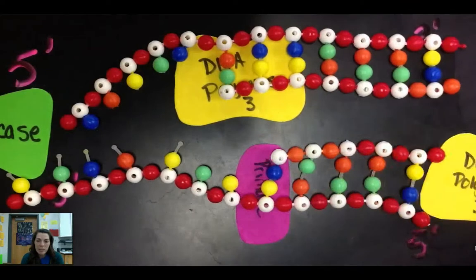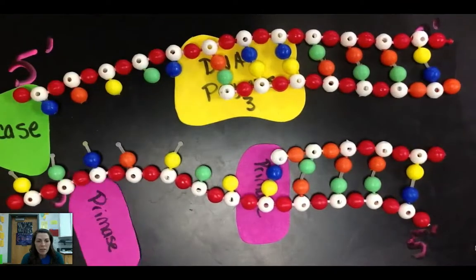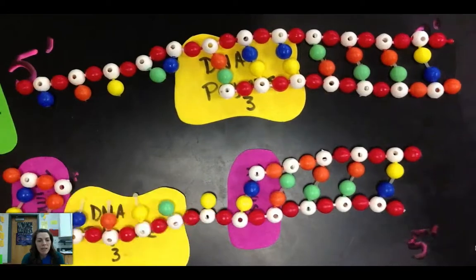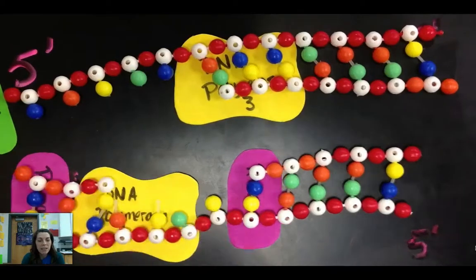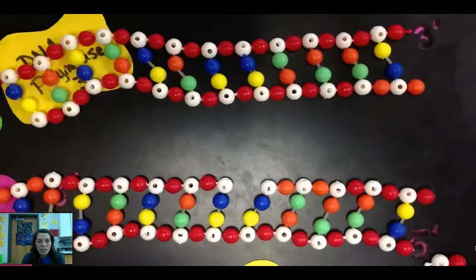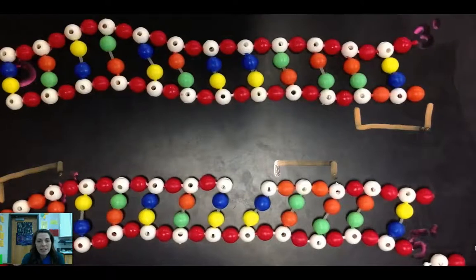On the lagging strand, the primase adds a primer and the polymerase makes a short Okazaki fragment. Then another primase comes in and adds another primer. Another DNA polymerase comes in and is going to move in the opposite direction. So my DNA polymerases go opposite directions and they're going to continue extending.